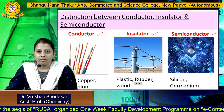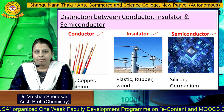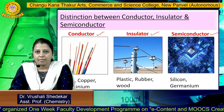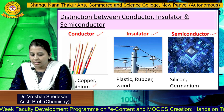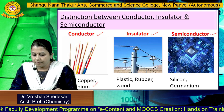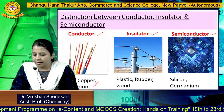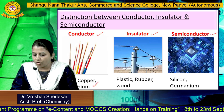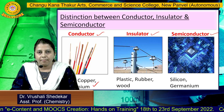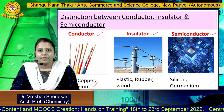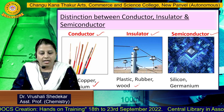Conducting materials have no forbidden band gap, which is why they show good conductivity. Good examples of conductors are gold, copper, and aluminum. Insulators show a large band gap between the valence band and conduction band; the best examples are plastic and rubber.